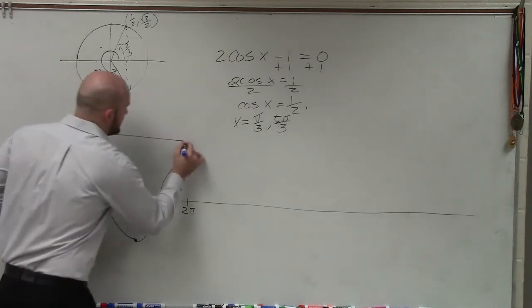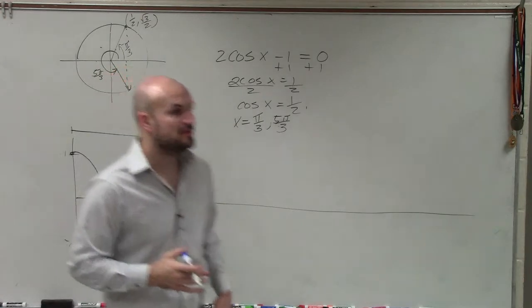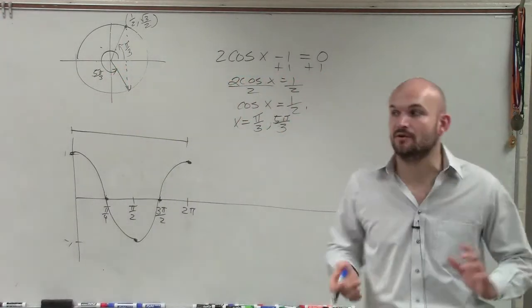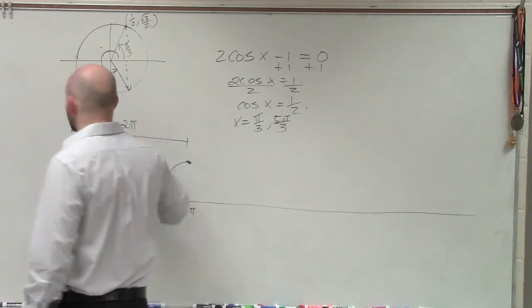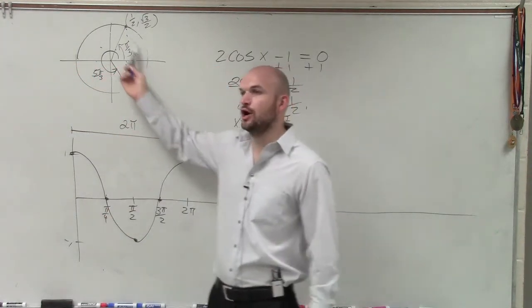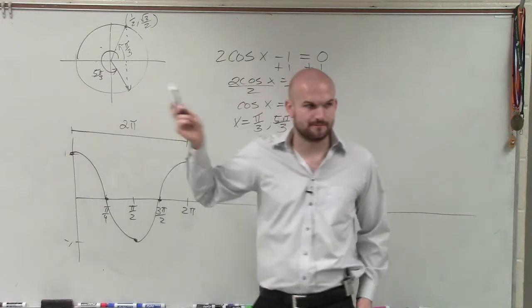Now that is one period, right? Remember, the period is the distance it takes the graph to repeat its cycle. The period for the cosine graph is 2 pi. It's like us going all the way around a circle, all right?